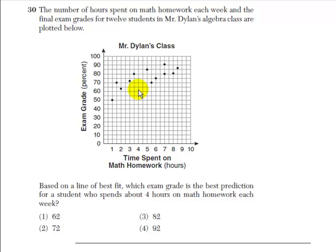92 and 62 are probably too far off, too low and too high. 82 is a bit high too because it doesn't seem like the line of best fit would go through that point.